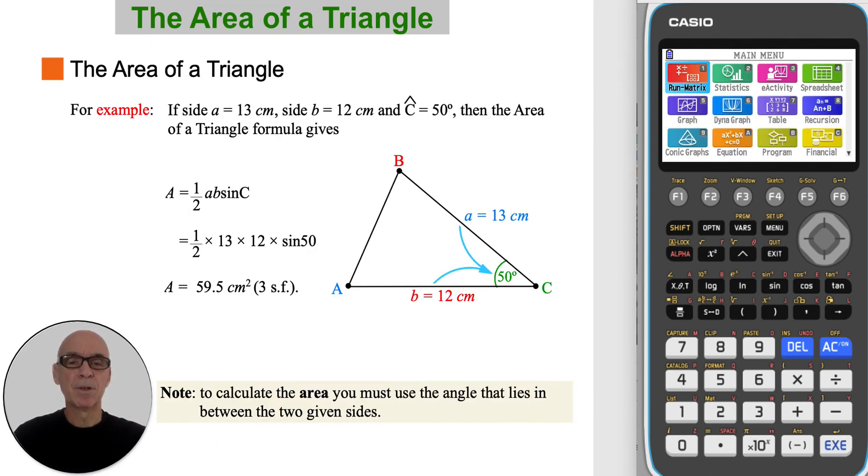In this example, the area of a triangle formula gives the value shown. To calculate the area, you must use the angle that lies between the two given sides.